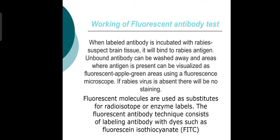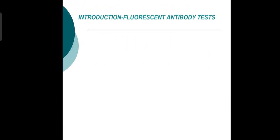Fluorescent molecules are used as labels. Enzymes and labels are present in fluorescent antibody techniques, which consist of labeling antibodies with dyes such as fluorescein isothiocyanate (FITC). There are two types of fluorescent antibody techniques: direct and indirect.